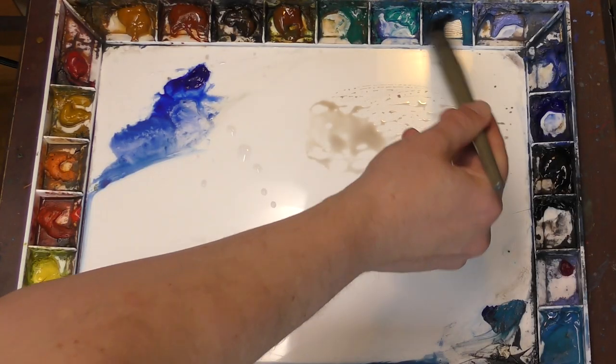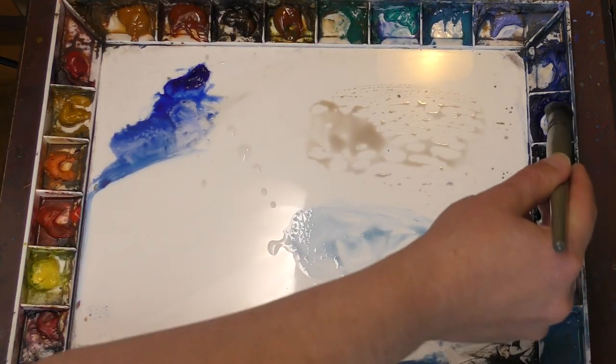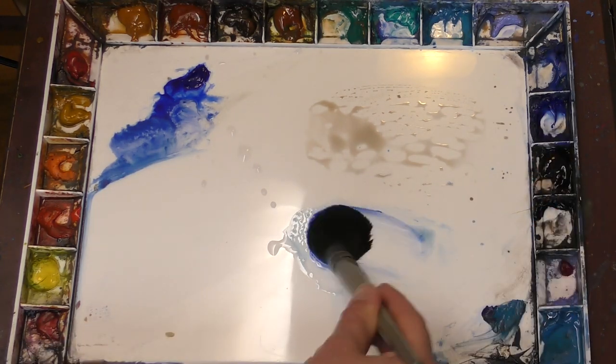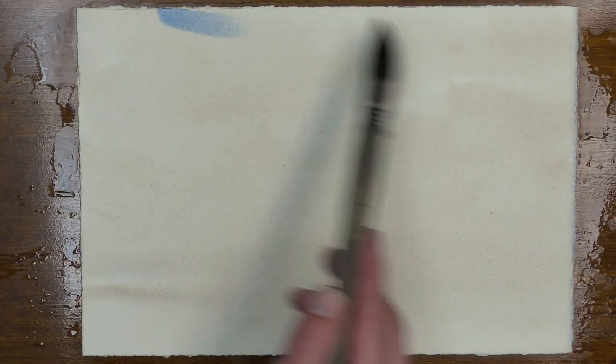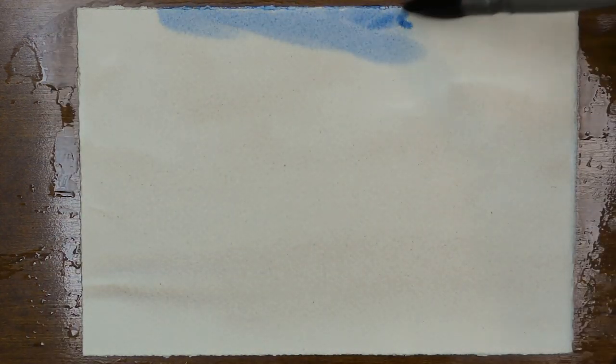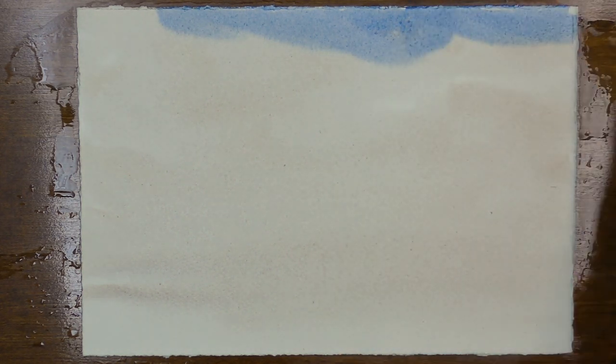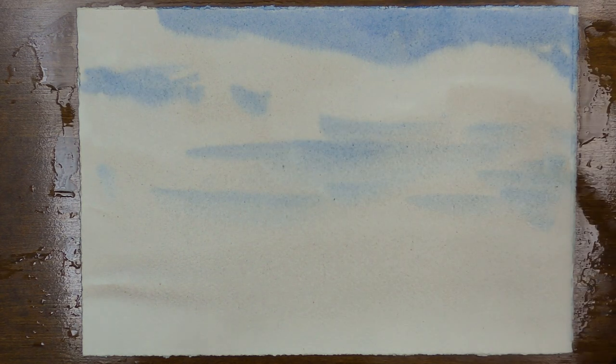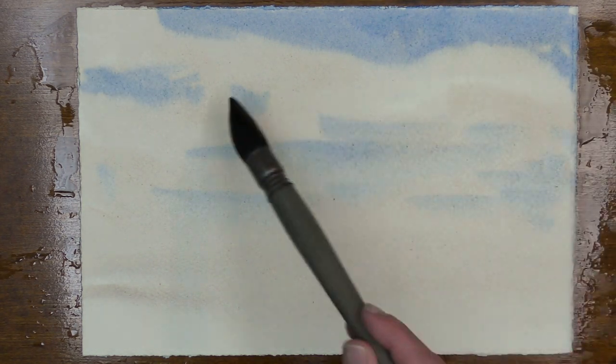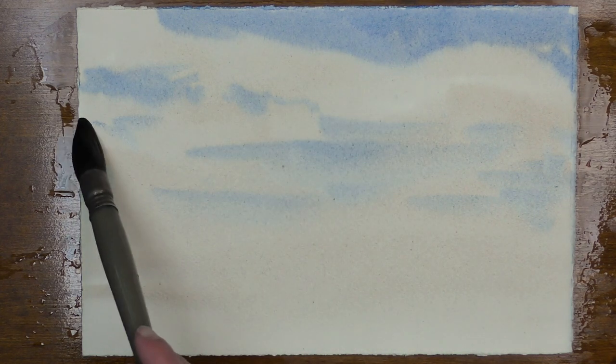So next I'm going to use some cerulean blue and maybe a touch of ultramarine blue. Now what we're going to do is we are going to negatively paint around our clouds. And this is a really fun part of the process, and you can do this over and over again. Your clouds will turn out a little different each time. So one thing that's helpful is to turn your brush, get a little bit of variety of brush stroke. You don't want every little mark to look exactly the same.